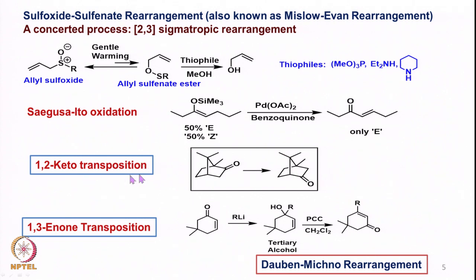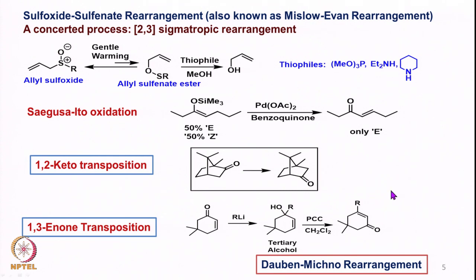We also saw 1,2-ketone transposition — if we have a ketone, we can migrate it to the next carbon using different types of chemistry. In the same context we did 1,3-enone transposition: if we have an enone of this kind, we can convert it to the corresponding transposed enone via a tertiary allyl alcohol using what is called the Dauben-Michno rearrangement, where an oxidant reacts with this tertiary allyl alcohol to form the enone. We discussed the mechanism and its application.